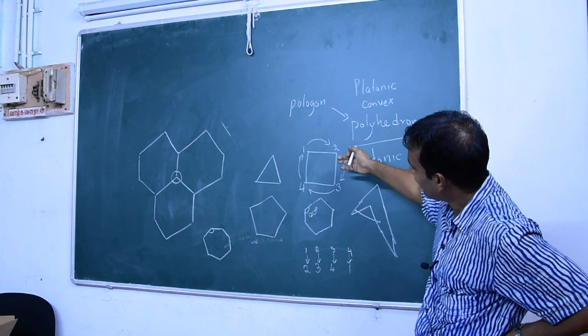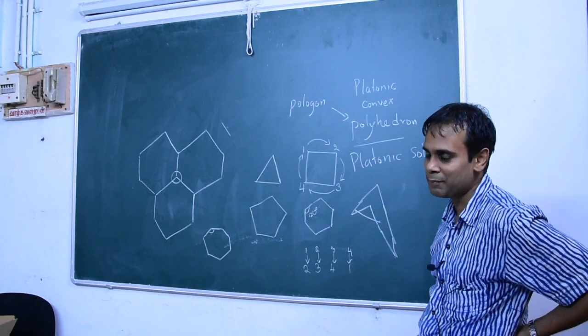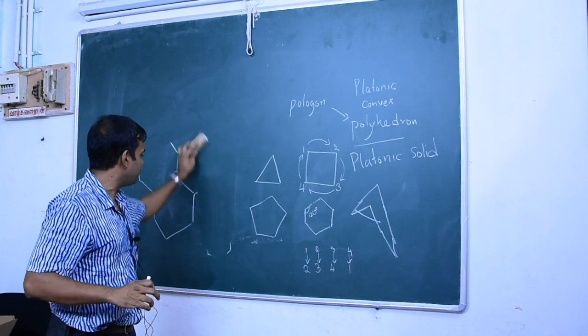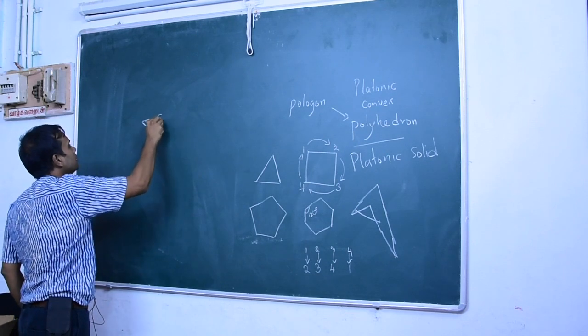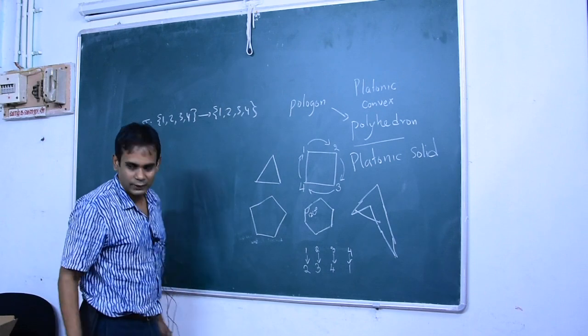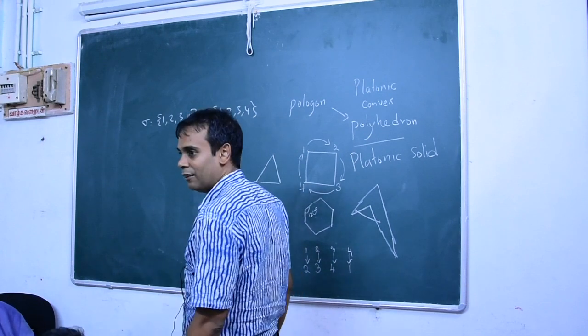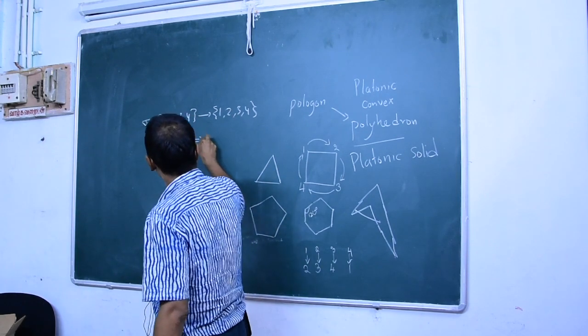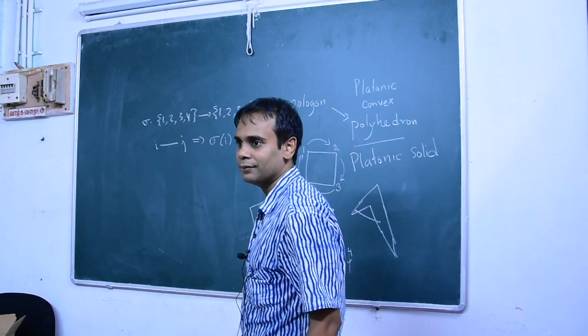And so, now I ask, how many different permutations are there, which will preserve this structure of this square? That means that I'm asking how many, so there are 4 points. So, I'm asking how many permutations are there? So, what is a permutation? It's a function sigma from the set 1, 2, 3, 4 to the set 1, 2, 3, 4. That is 1 to 1 and onto. It's a bijection. But it will also have an inverse. So, I'm asking how many of these are there, which will, if I and J are connected by an edge, then sigma I and sigma J are also connected by an edge.